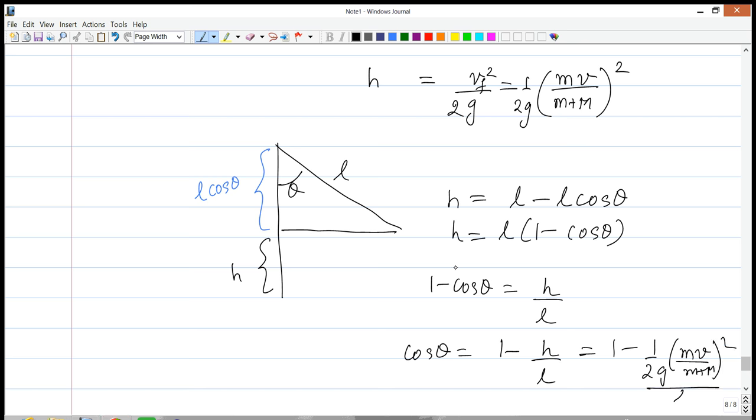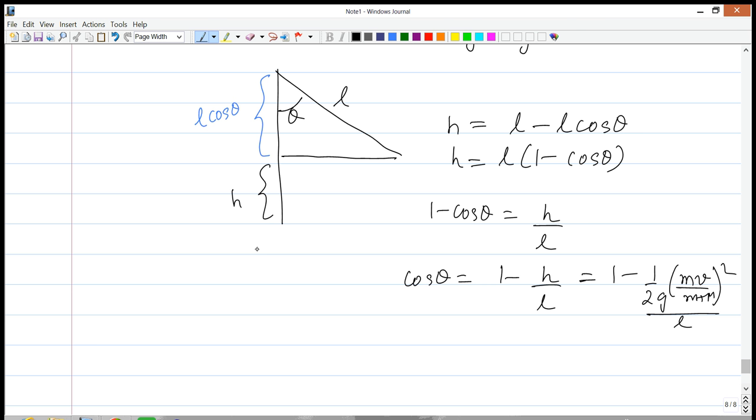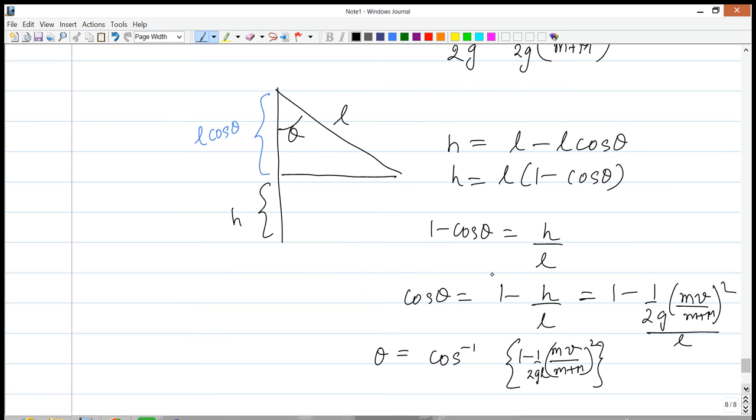So this is equal to 1 minus 1 over 2gL times mv over m plus capital M squared. And once we know this, we can find theta as simply cosine inverse of this entire expression. Which is nothing but 1 minus mv over m plus capital M squared, and I can write this as 1 over 2gL. Great. So this is how we can find the maximum angle theta in the problem.